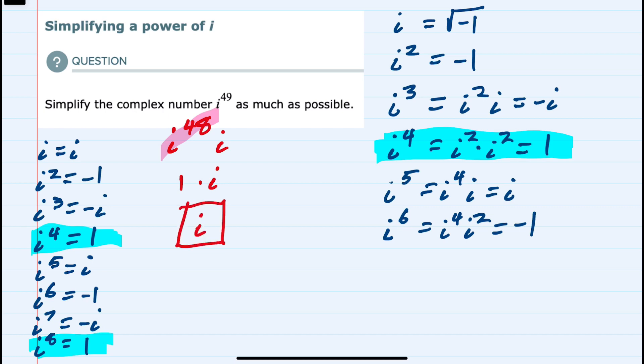So to summarize, because of the pattern of raising i to powers being such that it repeats itself, every time I have a 4th power of i, I can replace that with 1. And i to the 48th, being a multiple of 4, I can replace it with 1, and that simplified our complex number.